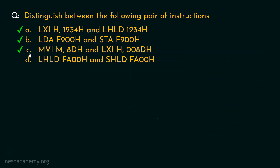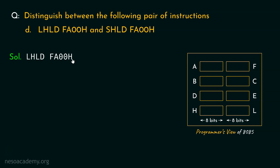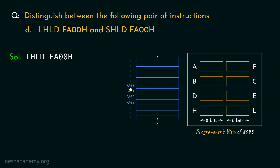Let's now focus on the fourth pair: LHLD FA00H and SHLD FA00H. For LHLD FA00H, the address FA00H is mentioned directly in the instruction. Suppose memory location FA00 contains 34 and the consecutive location FA01 contains 12. Since the address is sent directly in the instruction, the microprocessor knows exactly which location to point to.